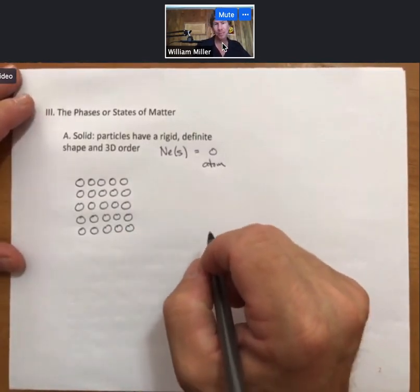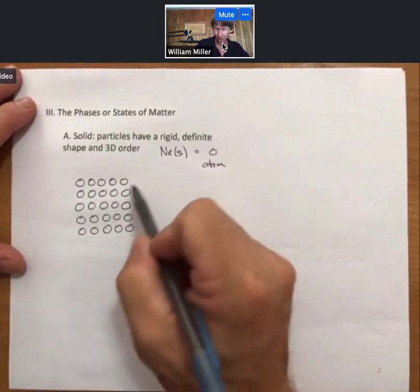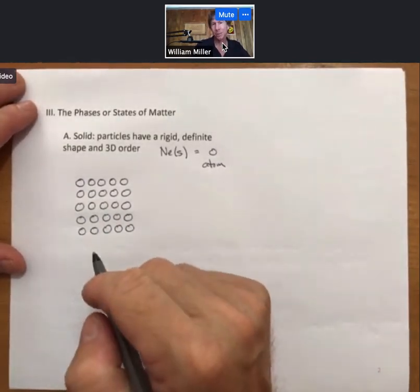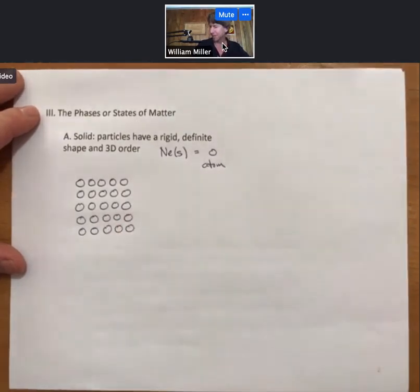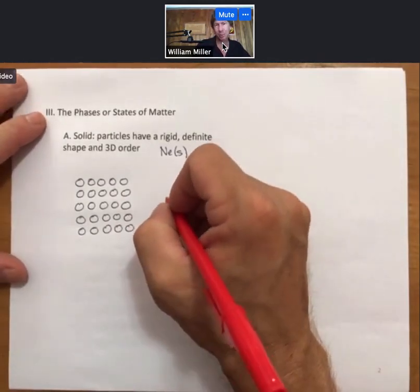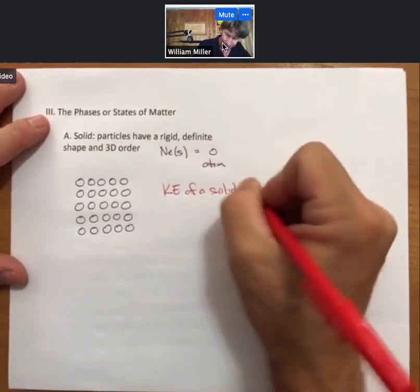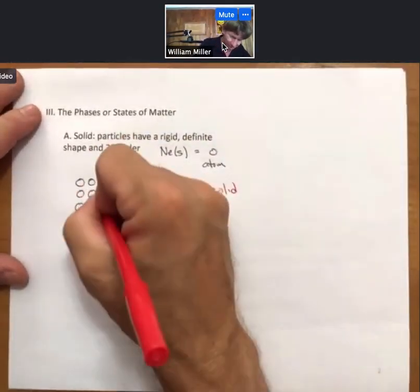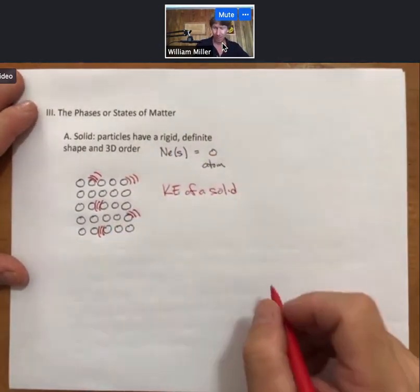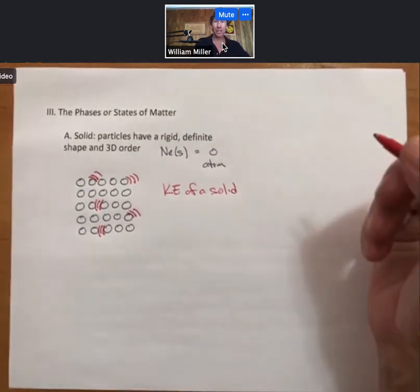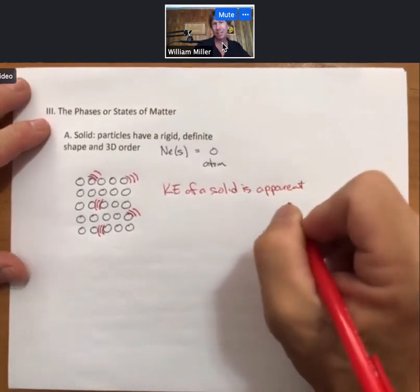One of the things that's really important to understand is that even though these are locked in three-dimensional order, that they have a rigid, definite shape that goes on in each of these directions, that if you're above zero Kelvin, which we are, since zero Kelvin is the lowest temperature, then all materials have kinetic energy, and the kinetic energy of a solid is reflected in each atom's vibrations. So kinetic energy of a solid is in its vibrations, and these are little vibration lines. The kinetic energy of a solid is apparent in each atom's vibrations.